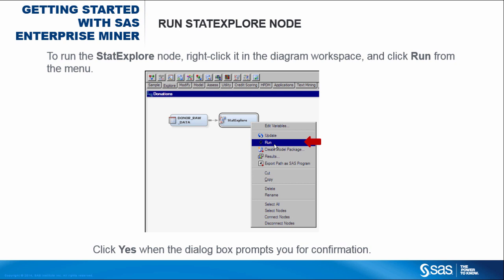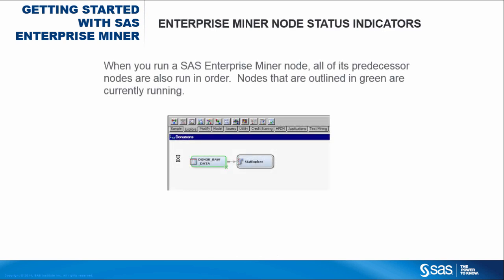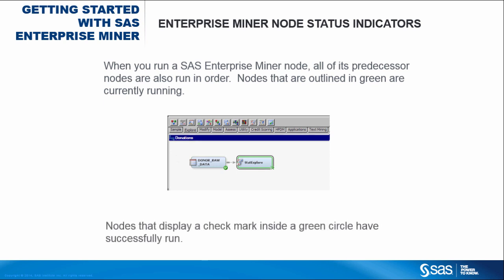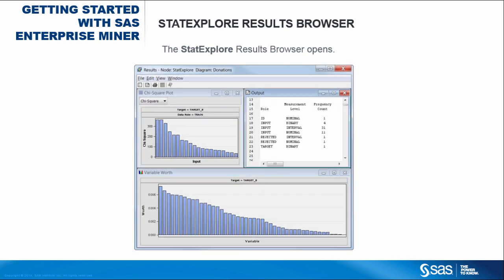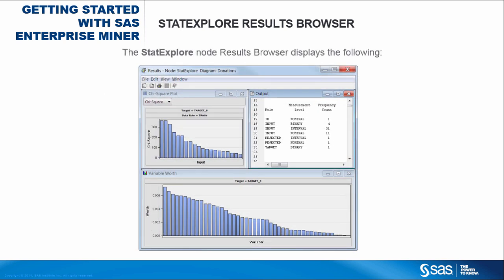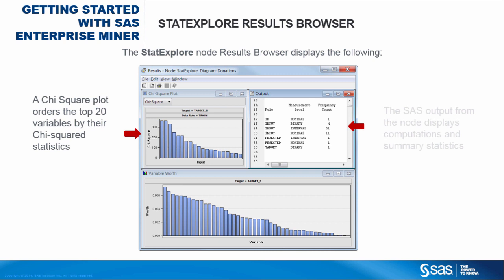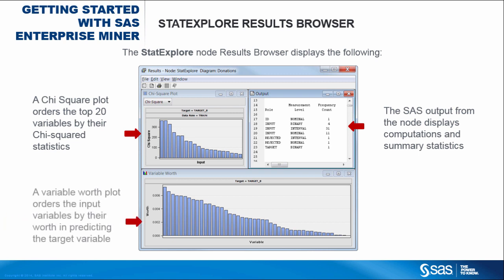Click Yes when the dialog box prompts you for confirmation. When you run a SAS Enterprise Miner node, all of its predecessor nodes are also run in order. Nodes outlined in green are currently running; nodes that display a checkmark inside a green circle have run successfully. In the window that appears after processing completes, click Results. The StatExplore results browser displays a Chi-Square plot ordering the top 20 variables by their Chi-Squared statistics, SAS output with computations and summary statistics, and a variable worth plot ordering the input variables by their worth in predicting the target variable.